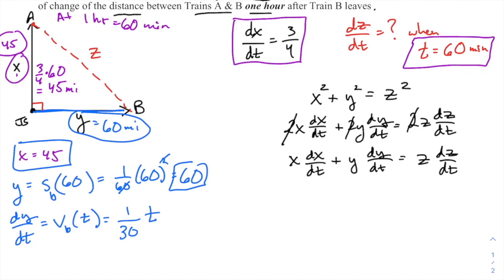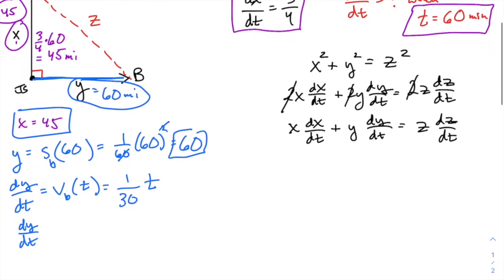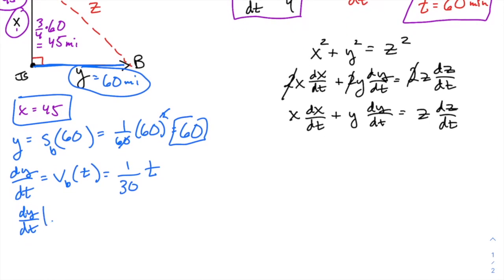And so if I want it at this moment when t is 60 minutes, we get 2—2 miles per minute would be the units on this. So okay, now I got dy/dt. I've got y. I just need z.